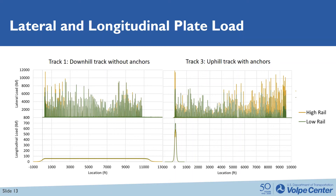Once the model is calibrated, we are able to take the train information into the model and calculate the plate load under the train passes. This figure shows the model results for Track 1 and Track 3. The top figures are the lateral spike loads for each track. There are many load spikes on Track 3, especially on the high rail. There are only a few load peaks on Track 1. For the longitudinal payload shown in the figure below, on Track 1, the longitudinal load is very small and widely distributed through the whole train, because Track 1 is the downhill track and the train is braking.